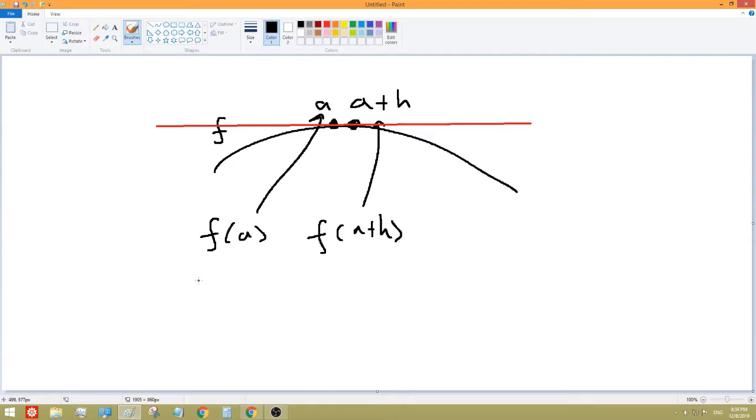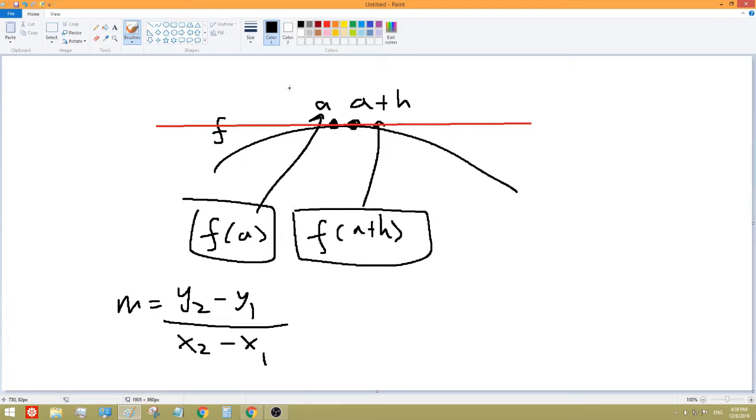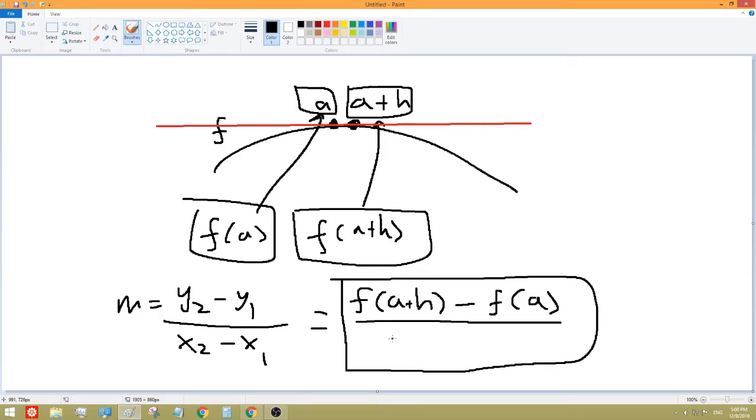So if we go back to our formula, M equals Y2 minus Y1 over X2 minus X1, we could actually substitute it in. So F of A plus H minus F of A over A plus H minus A. So this is our final equation, although we can simplify a bit. So we can cut out the A's and we'd be left with H on the bottom.